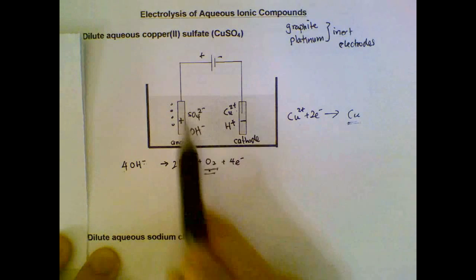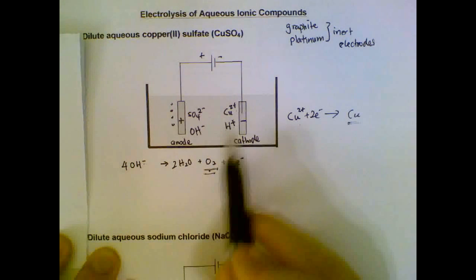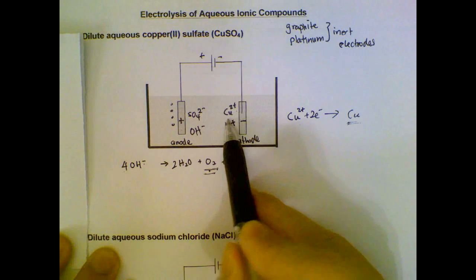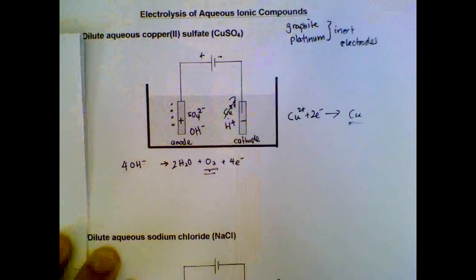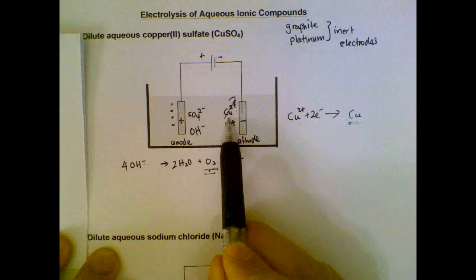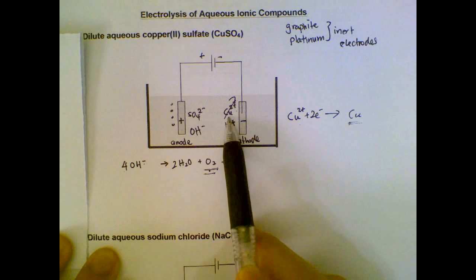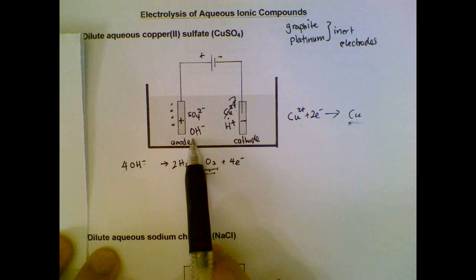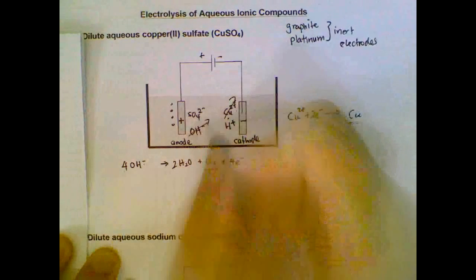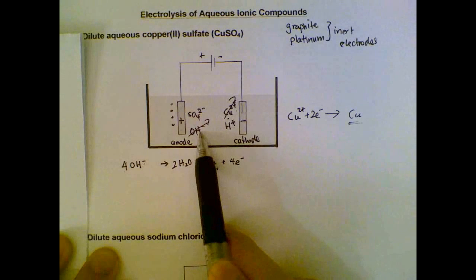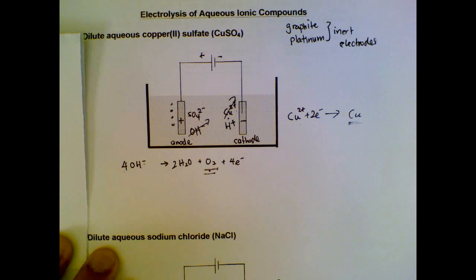What can we say about changes in the electrolyte itself? We are removing copper ions as they are being discharged. Since copper ions contribute to a blue solution, the fewer copper ions there are, the blue color fades or becomes lighter. At the anode side, we are removing hydroxide ions, so the solution becomes more acidic and the pH of the electrolyte decreases.